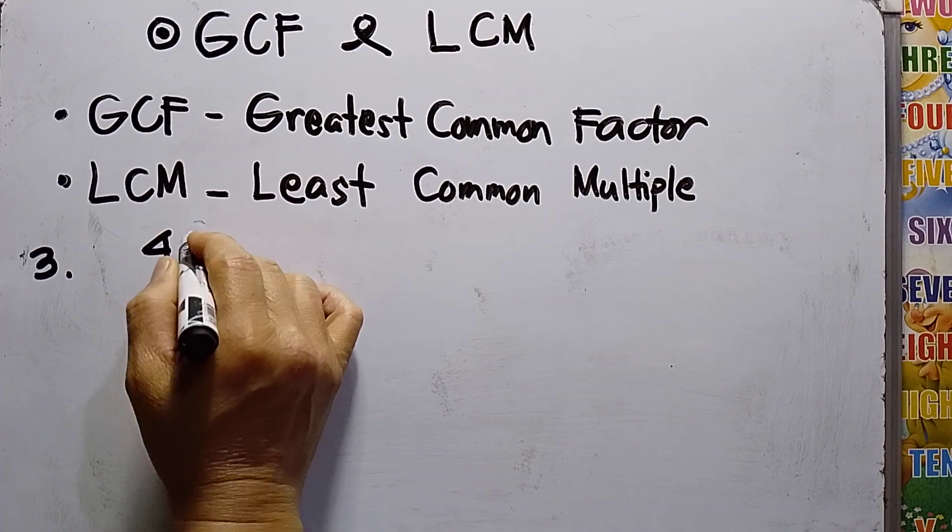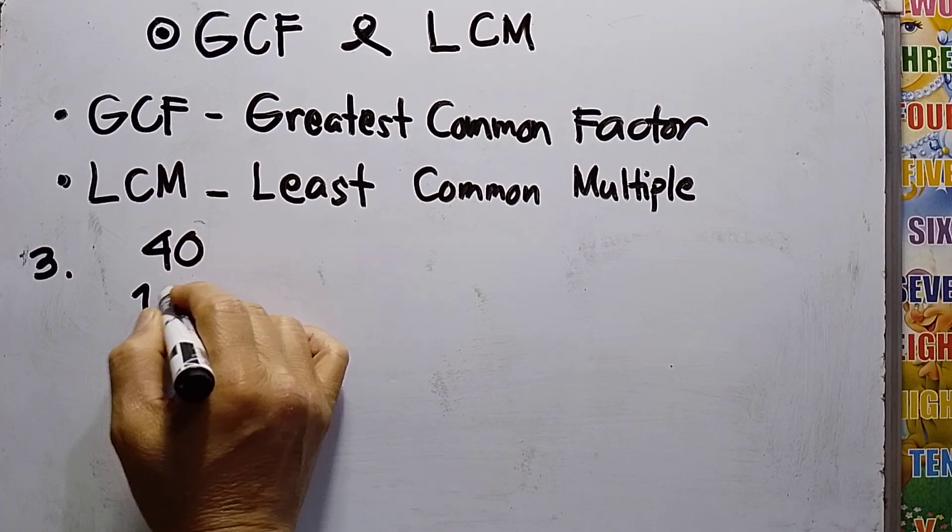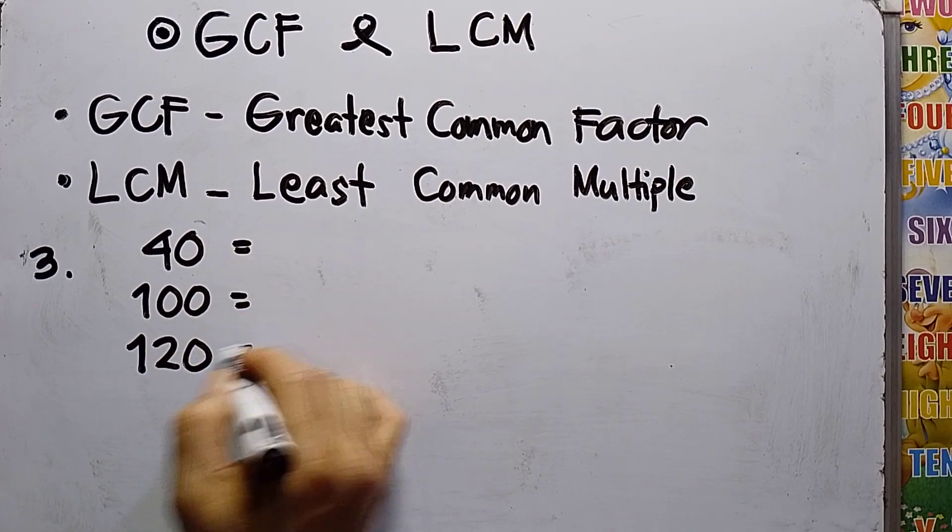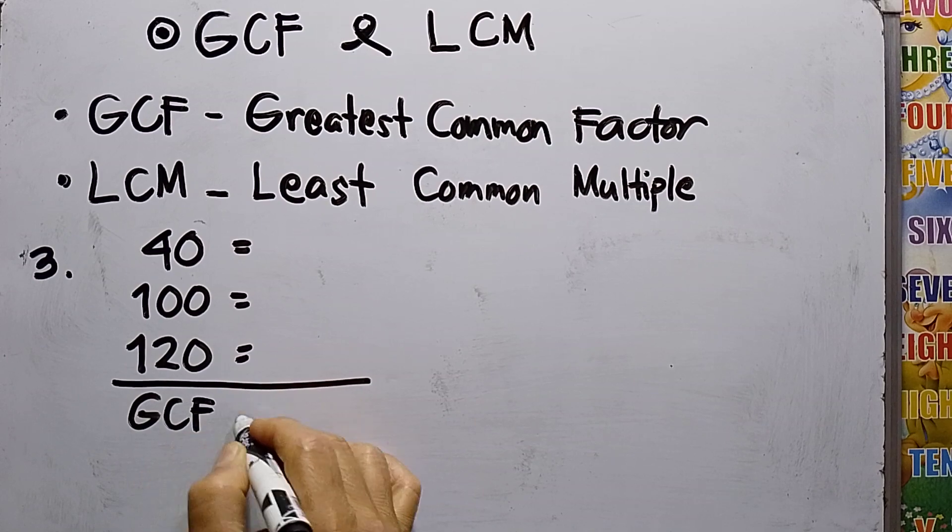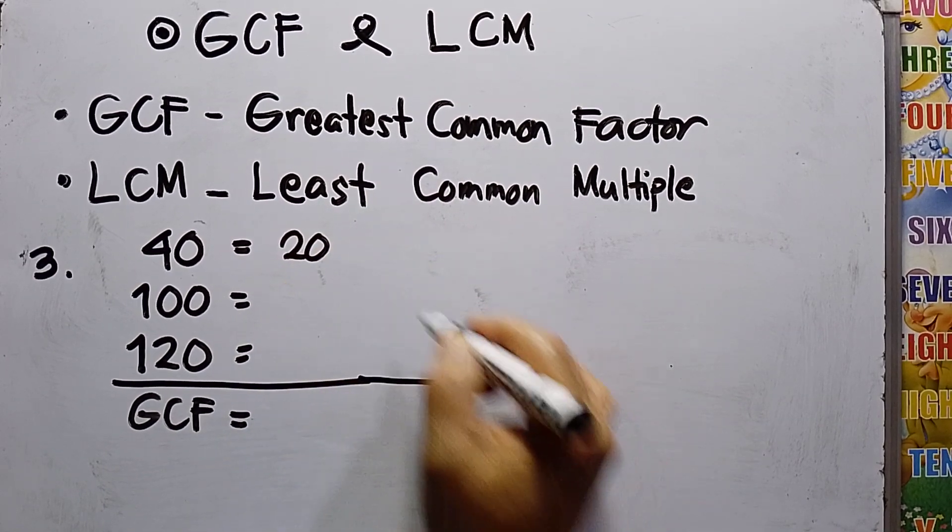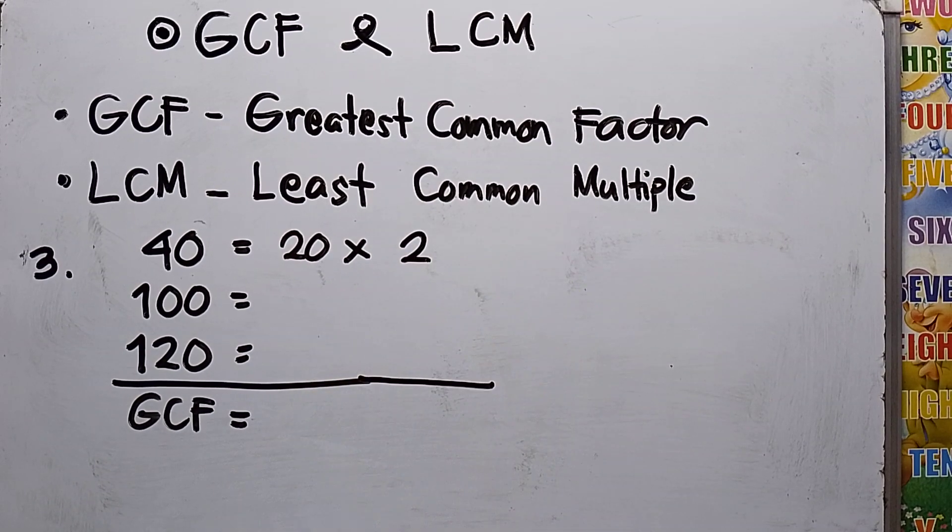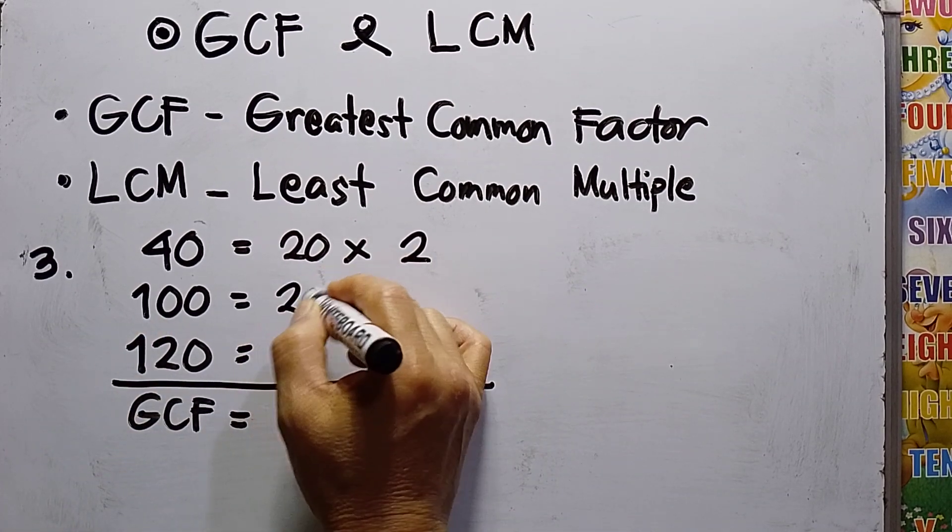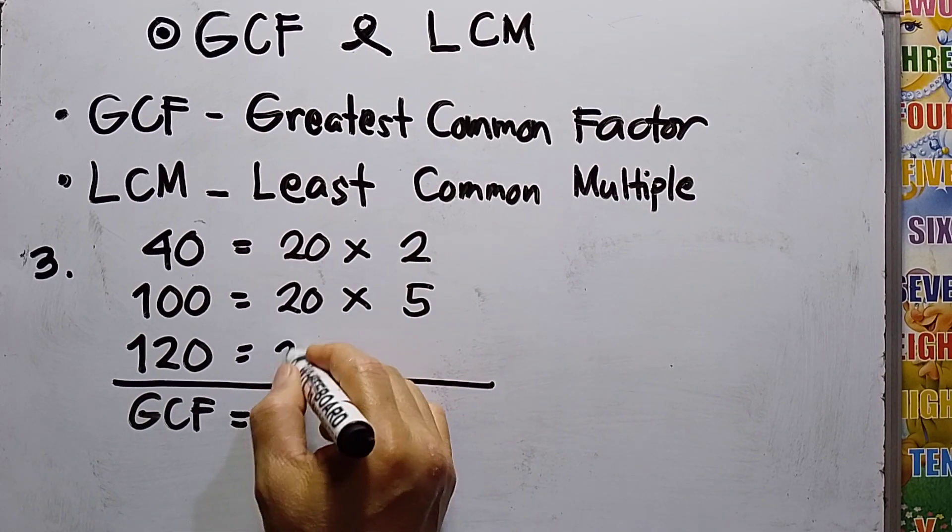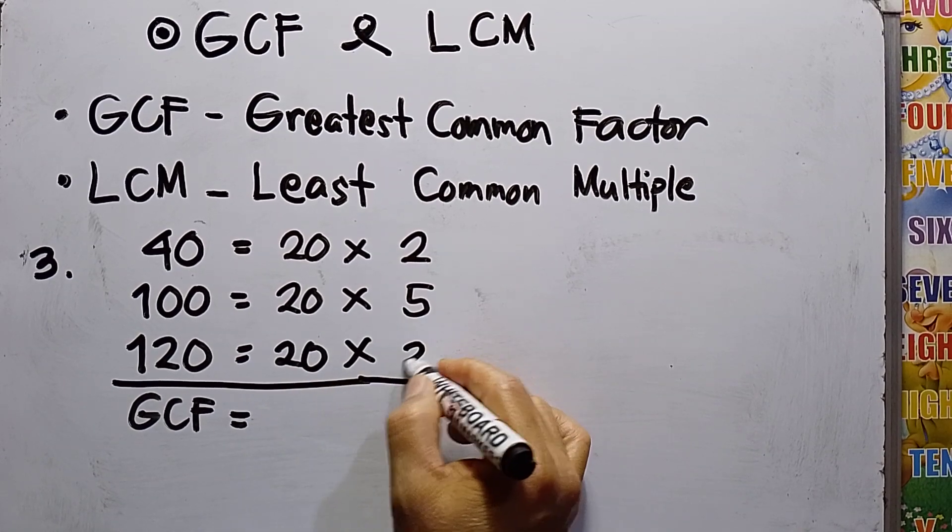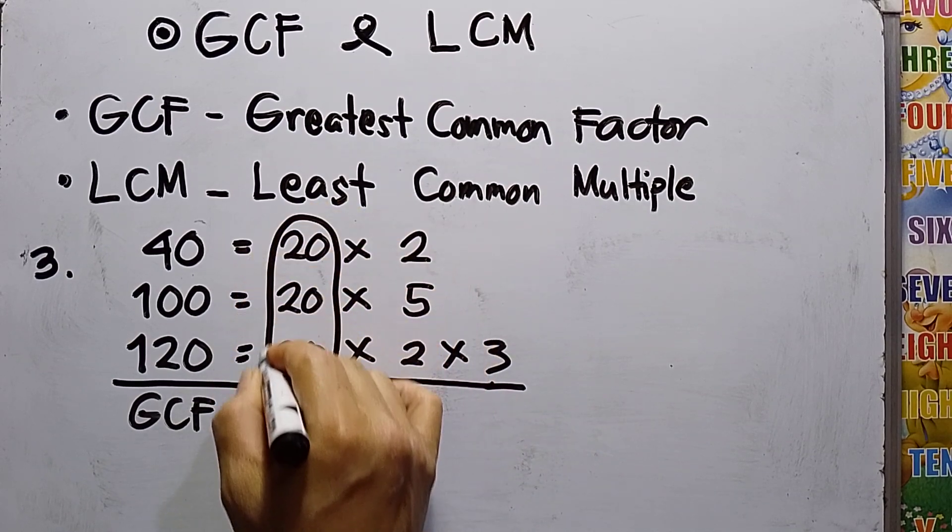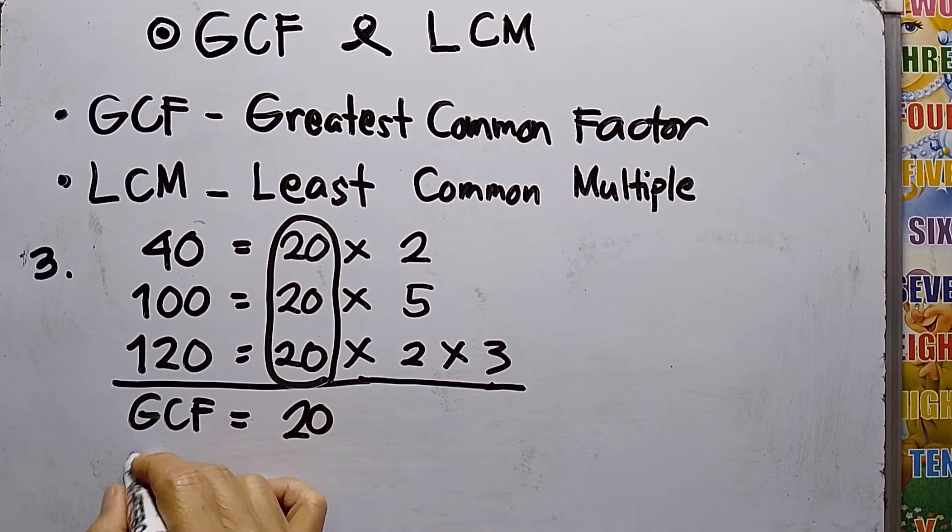Number 3 is 40, 100, and 120. The same: find the GCF and LCM. 40 will be 20 times 2. How about 100? 100 should be 20 times 5. How about 120? 20 times 2 times 3. So GCF, greatest common factor, is 20.